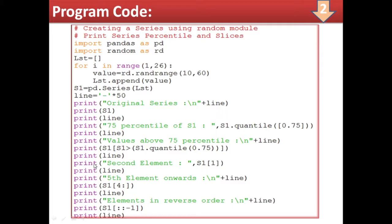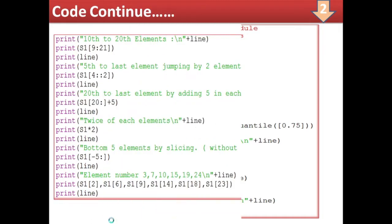After drawing another line, for the second element we write s1[1], since index number 0 is the first element and index number 1 is the second. Then for fifth element onwards, a new line and separator line are drawn. Fifth element means having index number 4, so slicing is done using s1[4:] — from the fourth index onwards all elements are displayed. Then a line is drawn. The next query is to print all elements in reverse order, done by s1[::-1], which prints the last element first, then second last, and so on.